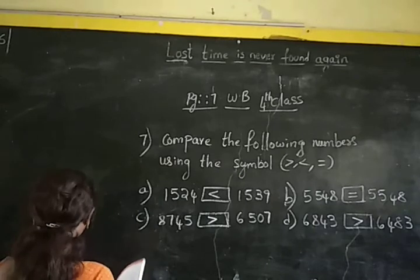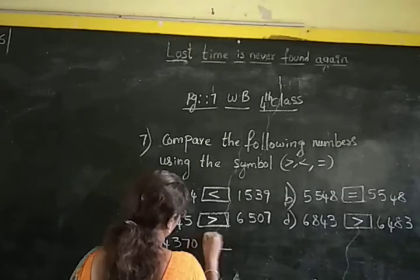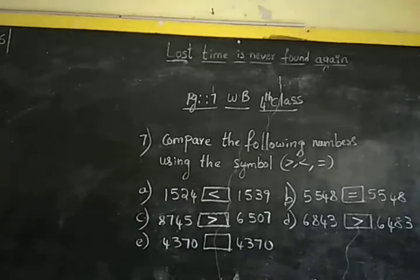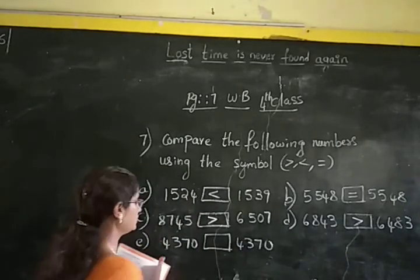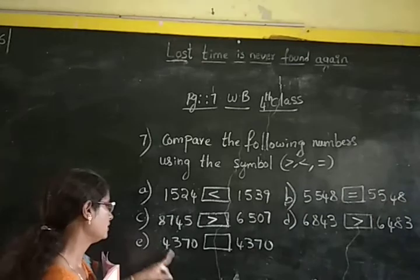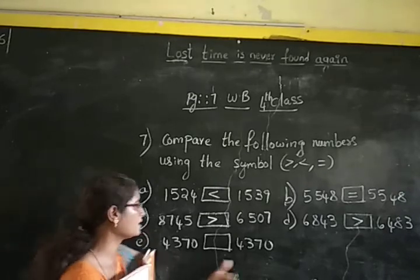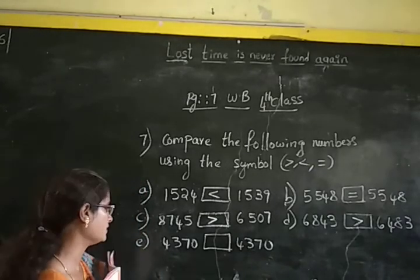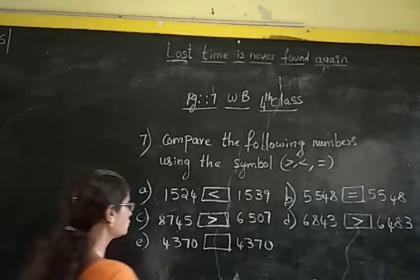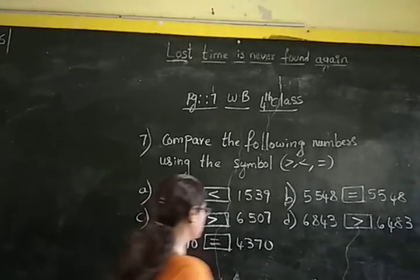Next sum: 4,370 and 4,370. Both numbers have the same digits in all places — 4 in thousands, 3 in hundreds, and the same in tens and ones places too. So we put the symbol equal to because both numbers are the same.